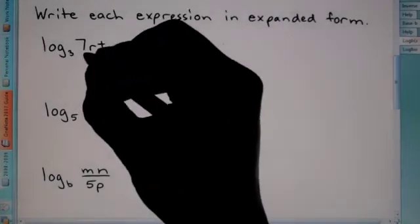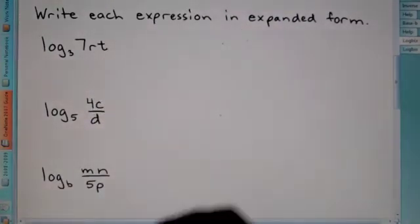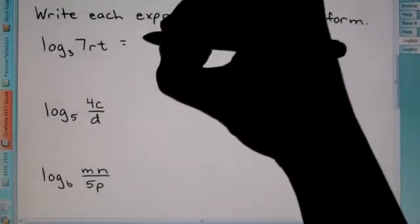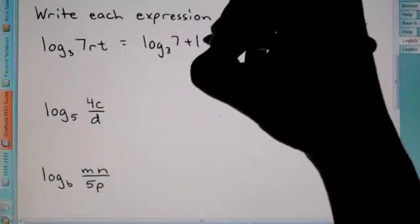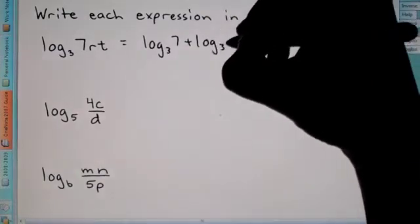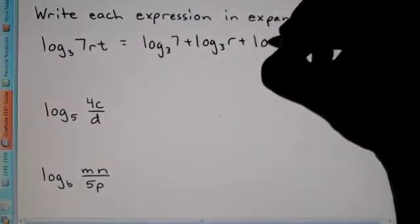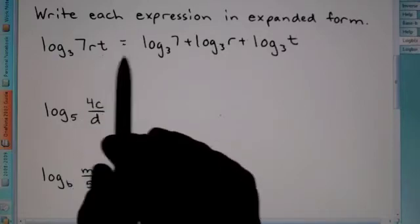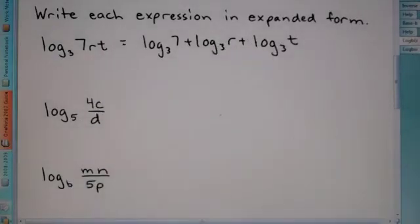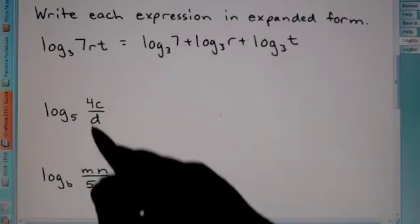So, we see here 7 times r times t. So, since it's all multiplied, we can rewrite this as log base 3 of 7 plus log base 3 of r plus log base 3 of t. And that's all we have to do. All it wants us to do is write it in expanded form. So, again, since we have three terms being multiplied, we can separate them all with plus signs. And just make sure log goes before each one.